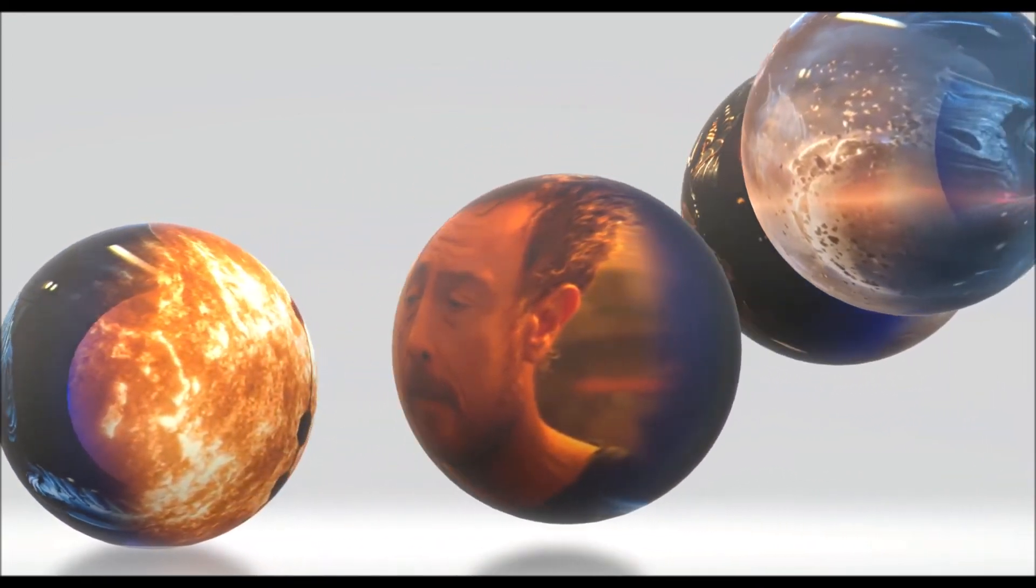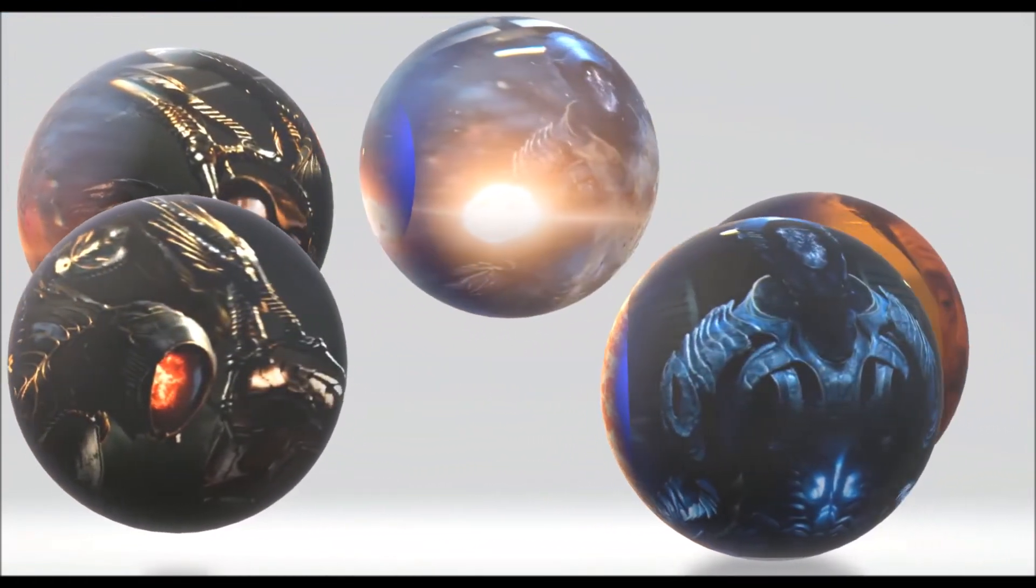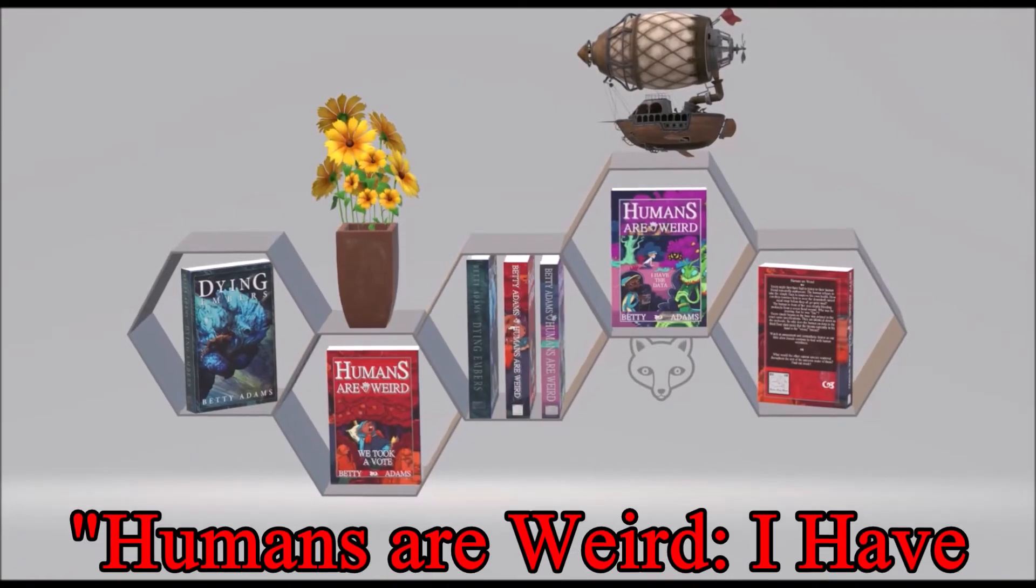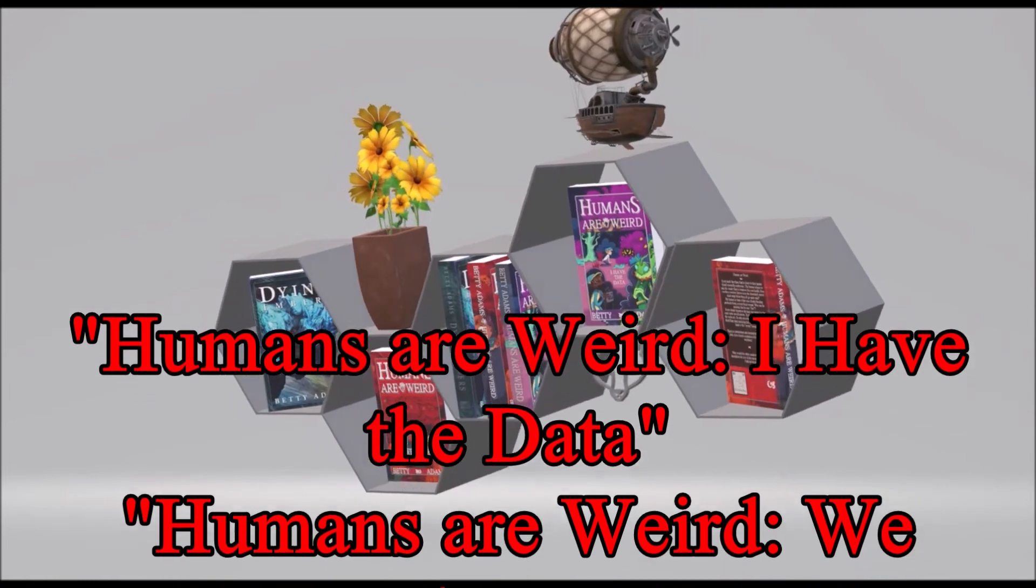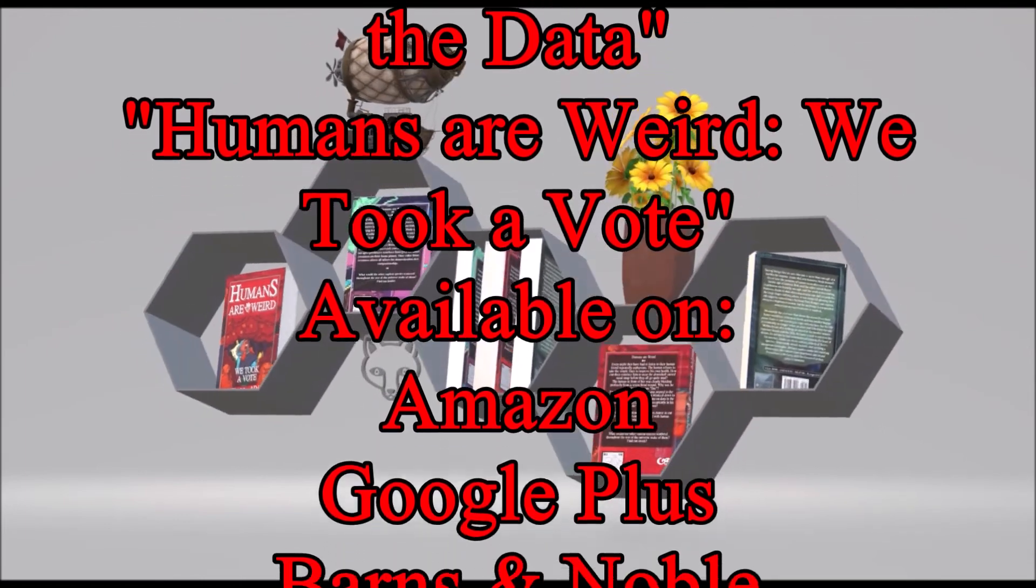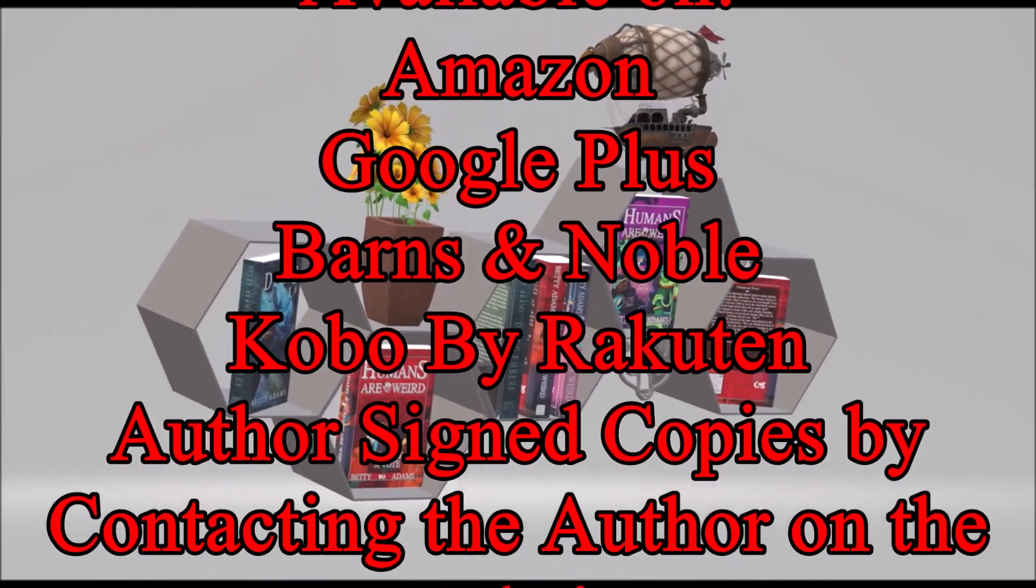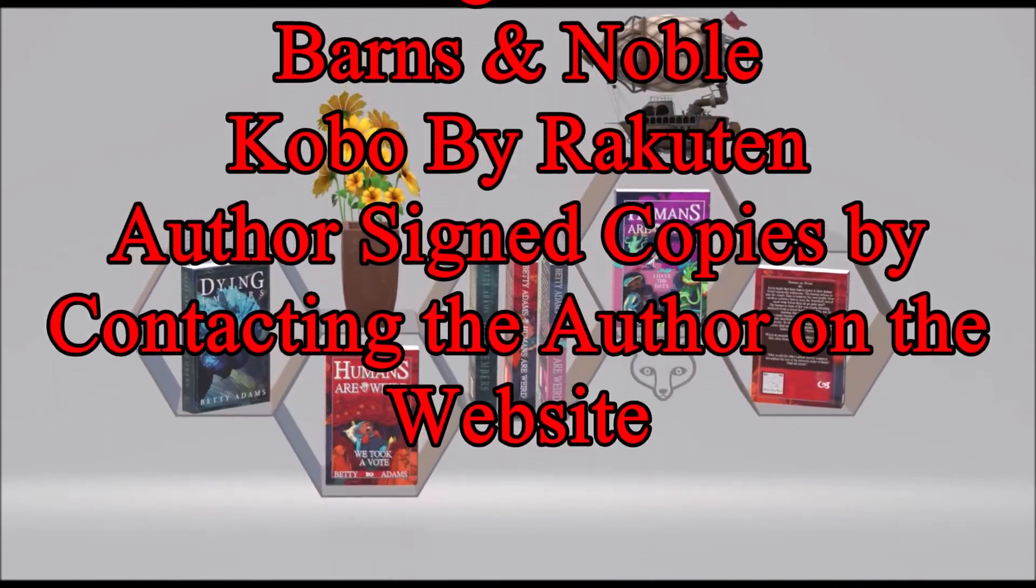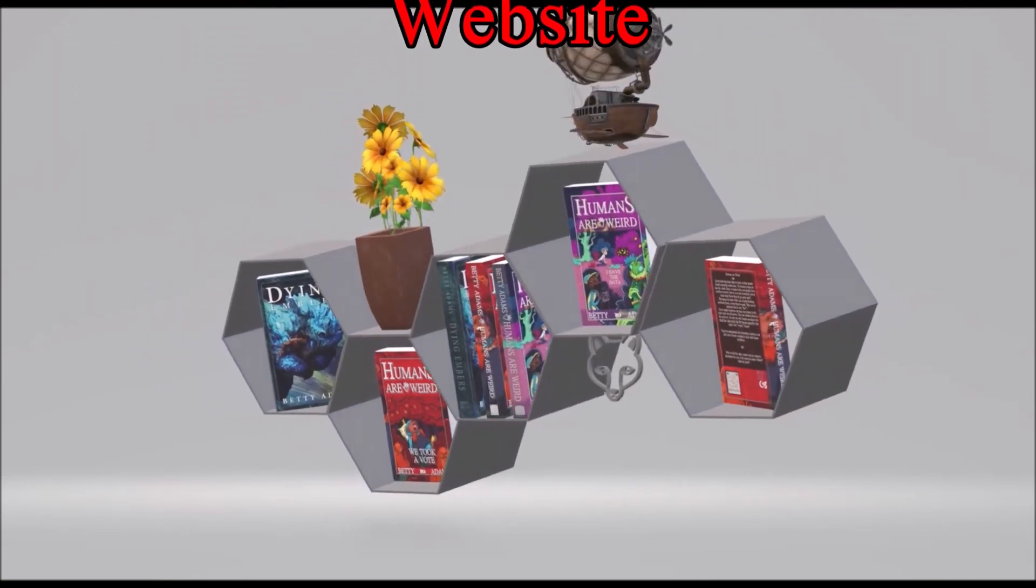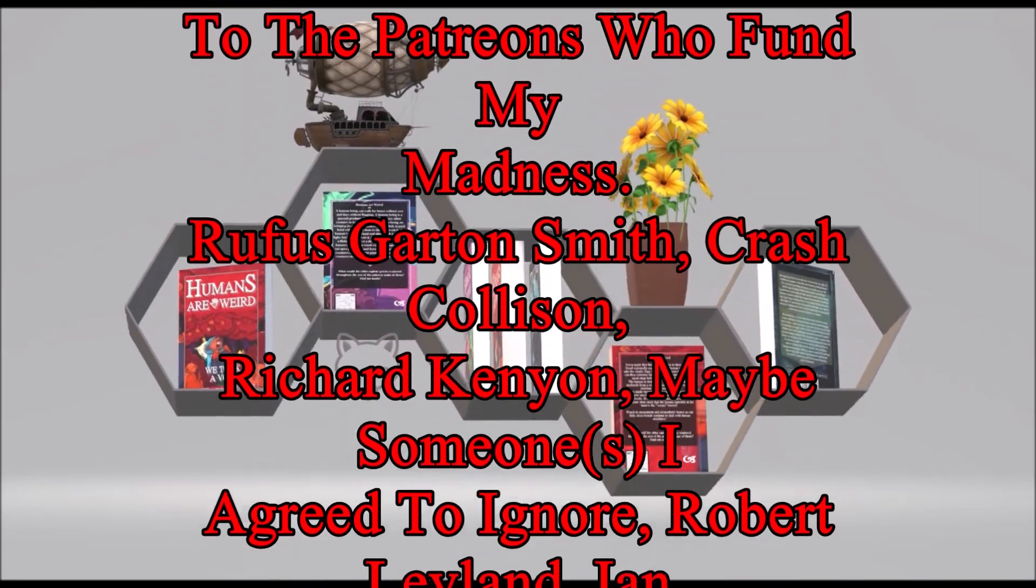Hit that like and subscribe button. Go check out my books, Humans Are Weird. I have the data and Humans Are Weird: We Took a Vote, available on Amazon and wherever books are sold. Two books in a series of human absurdity. Go check out these short story collections. What will our little green friends think of us when we finally do make it to space? Find out the answer in two books of human absurdity. Available on Amazon, Barnes and Noble, Kobo, and Google Play.